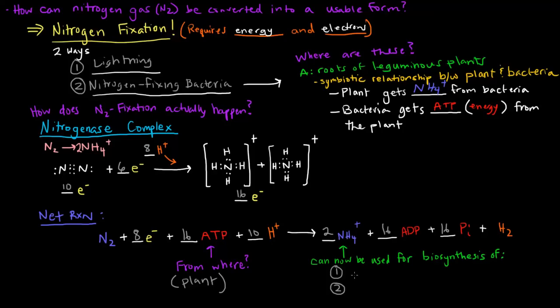Now this ammonium can be used for the synthesis of amino acids, which can be used for proteins, and nucleotides, which can be used for production of nucleic acids like DNA and RNA.